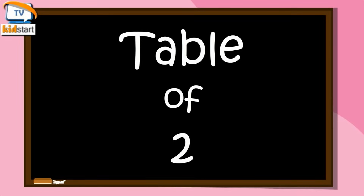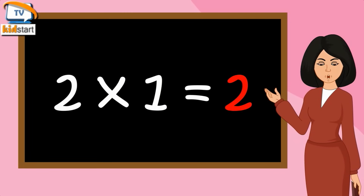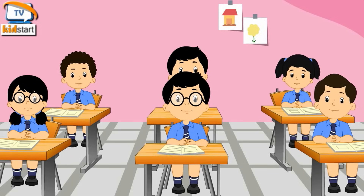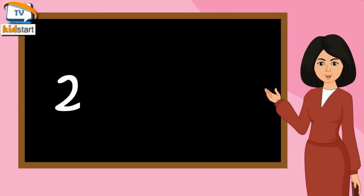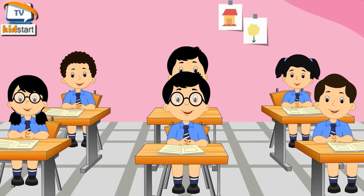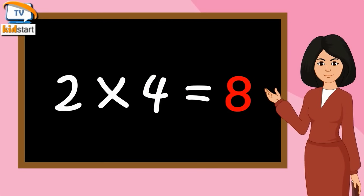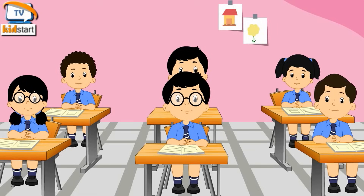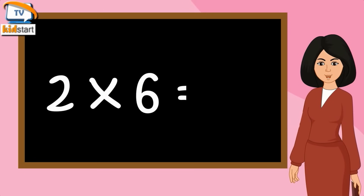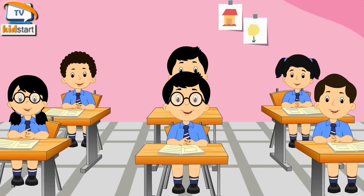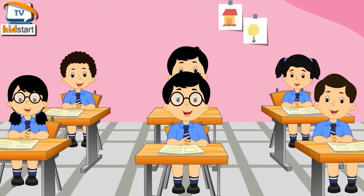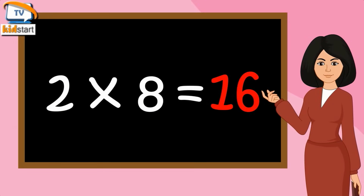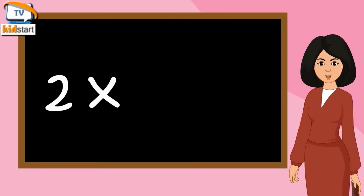Table of Two. Two Ones are Two. Two Twos are Four. Two Threes are Six. Two Fours are Eight. Two Fives are Ten. Two Sixes are Twelve. Two Sevens are Fourteen. Two Eights are Sixteen. Two Nines are Eighteen.